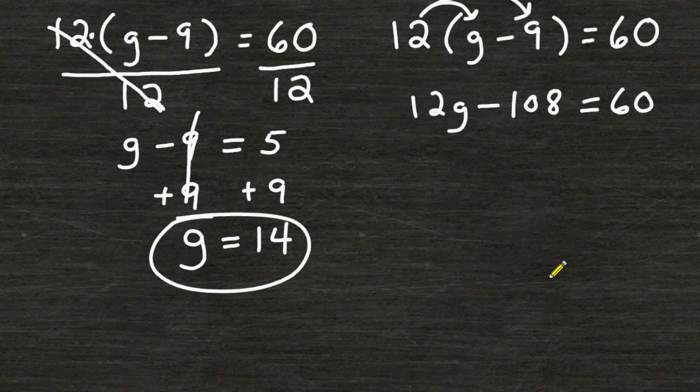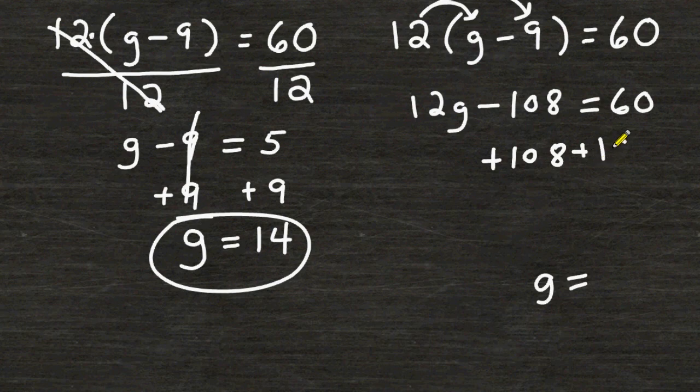Now what we are trying to do is isolate the variable so at the end we have g all by itself. So we can say that g is equal to some number. So what we have to get rid of first on the left hand side of our equation is this minus 108 and the opposite of that is to add 108. And you always do the same thing to the other side of your equation to balance out your equation.